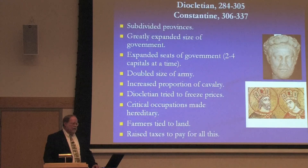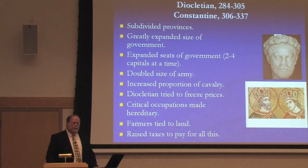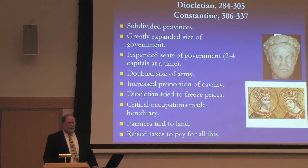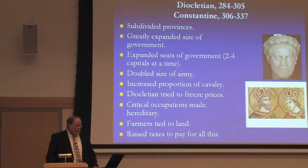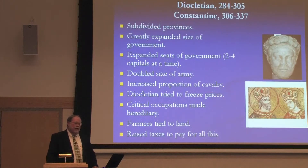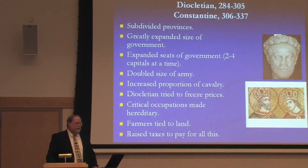They also doubled the size of the army, and this was probably the biggest cost. This was the thing that they really needed to do the most. They increased the proportion of cavalry because they needed to be able to move rapidly to contain incursions across the frontier. Cavalry are very expensive — horses are expensive, much more expensive than foot soldiers.